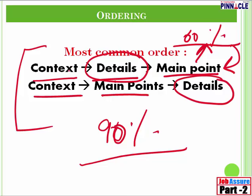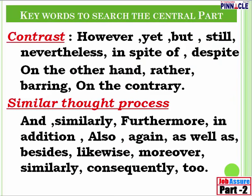By doing all this, trust me, you will be able to score 100% marks in your para jumbles. Now let us move on to the keywords. I hope you understood what is context, what are details, and what are main points. Now you have to gain mastery of putting the details in order. This slide is extremely important — each and every word on it should fit into your minds. The details are also known as the central part of the para jumble. Keywords to search the central part.